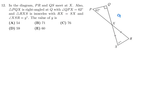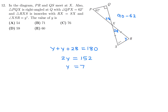90 minus 62 is 28, so 28 goes in here. By opposite angles, that's also 28. Because the triangle is isosceles, those two base angles are the same, so this is also Y. That means Y plus Y plus 28 equals 180, so 2Y equals 152, and therefore Y equals 76. Number 12, the answer is C.